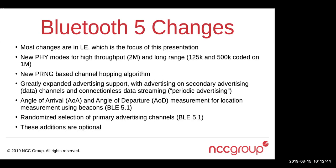The other notable change in Bluetooth 5.1 is that they removed the requirement that all advertisements on the primary channels be sent in order of 37, 38, and 39. In 5.1, the spec permits randomizing that order. Importantly, all the changes described are optional in the Bluetooth 5 specification, so it is possible to make a conformant Bluetooth 5 device that supports none of these new features.